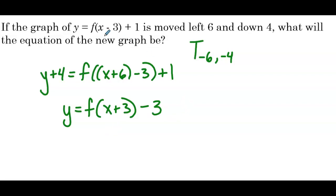Let's think about this. The original graph y equals f of x minus 3 plus 1 represents a translation of right 3 and up 1. If it's already right 3 and then we move left 6, that's the same as just moving left 3, which gives x plus 3. And if it was up 1 and we moved down 4, that's the same as just moving down 3, giving minus 3. The equation is correct.